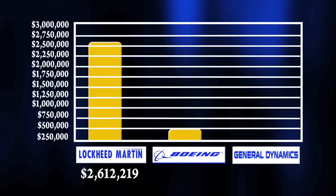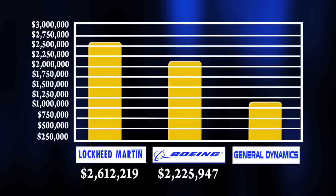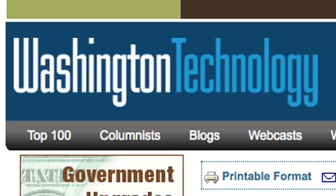Boeing gave over $2.2 million in 2008, with 58% going to Democrats. General Dynamics provided over $1.6 million to both parties.